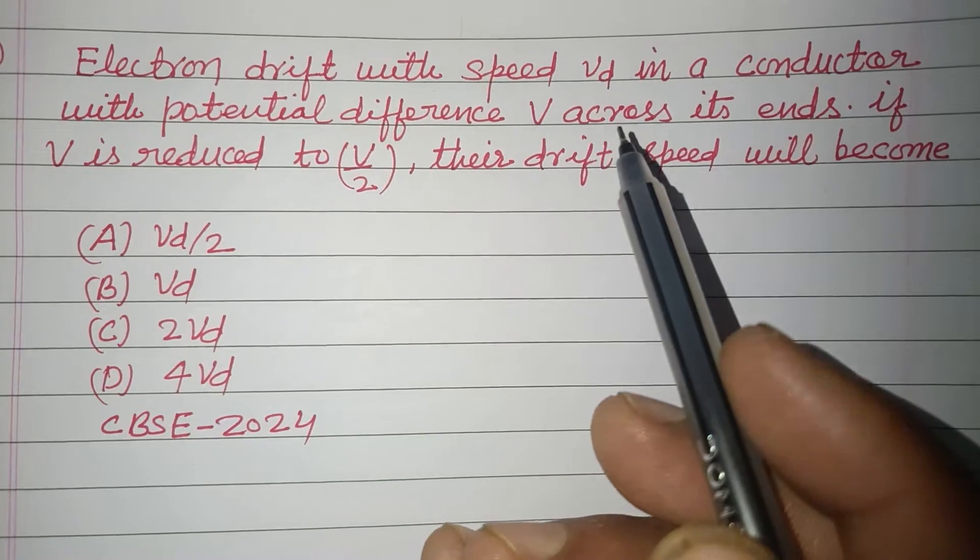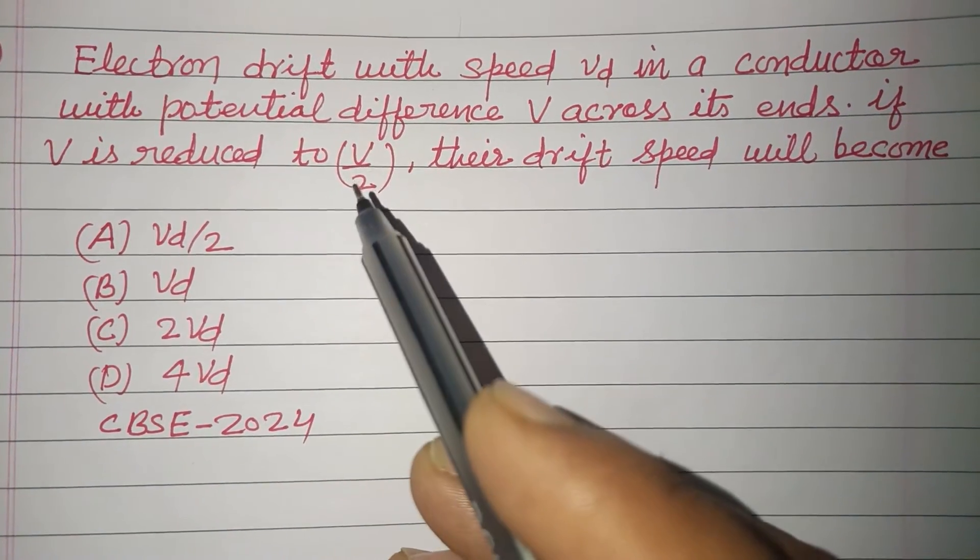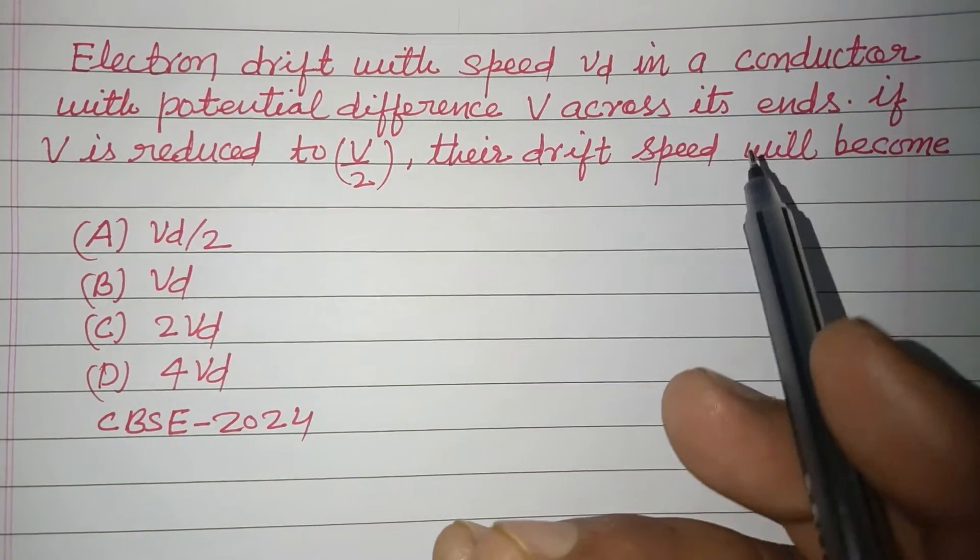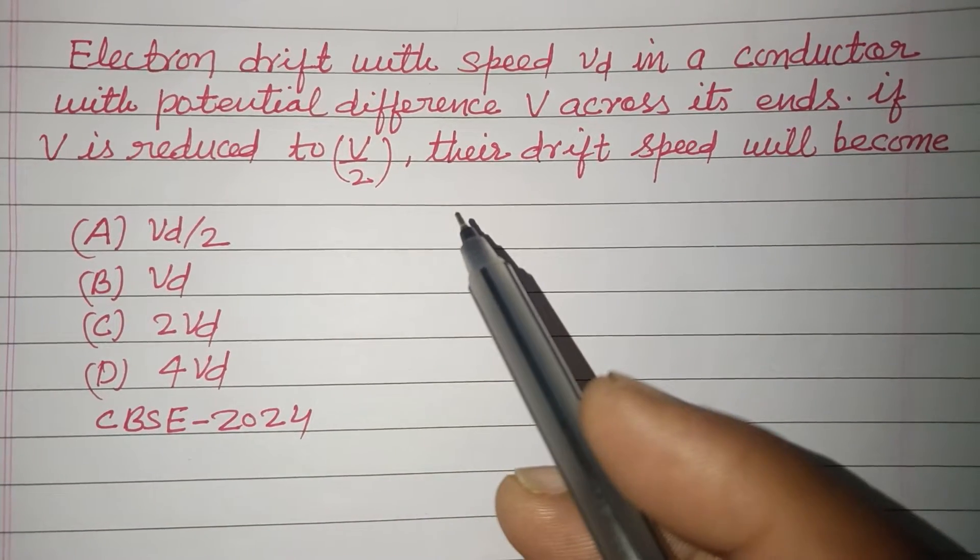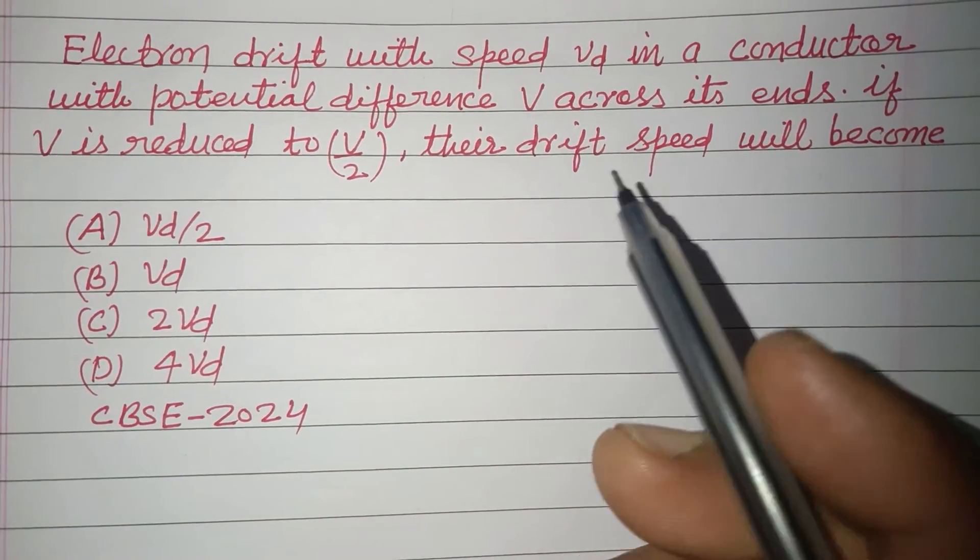Electron drift with speed VD in a conductor with potential difference V across the end. If V is reduced to V by 2, their drift speed will become.